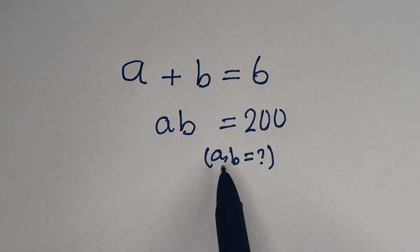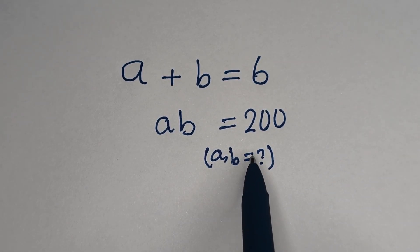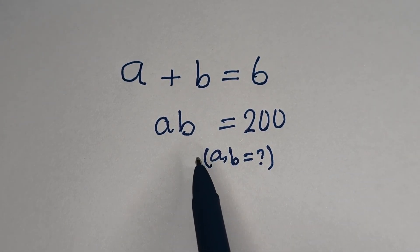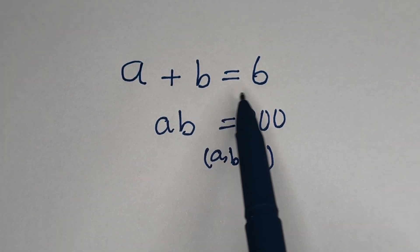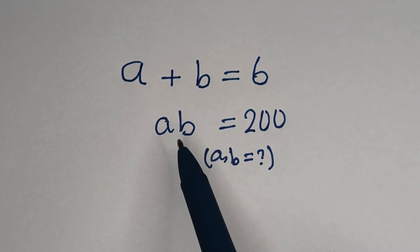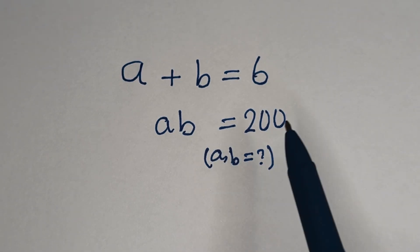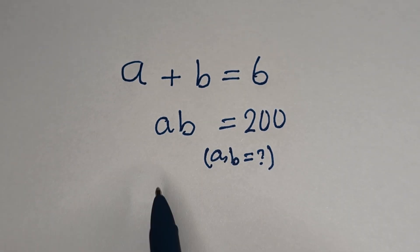Hello. How to solve for A and B in this equation: A plus B is equal to 6, and AB is equal to 200.